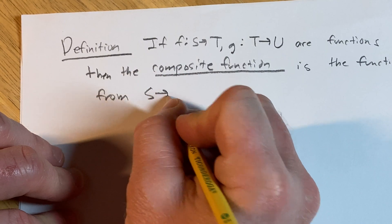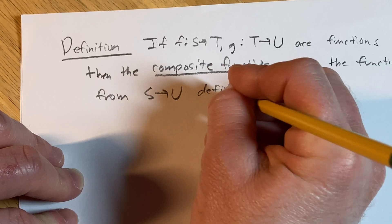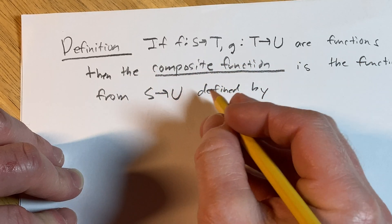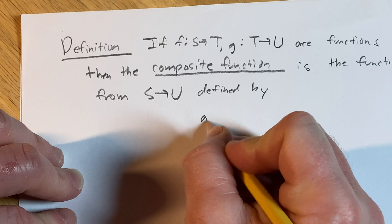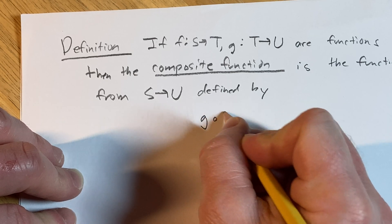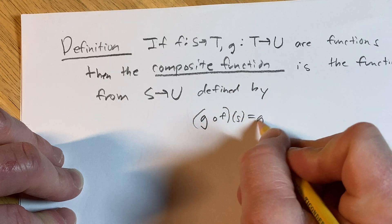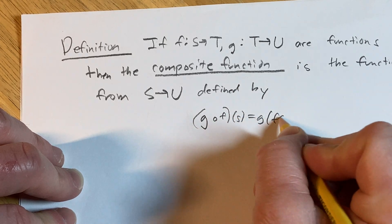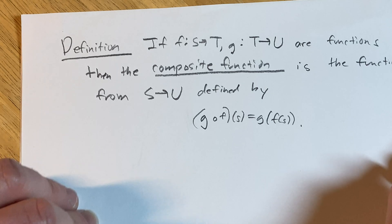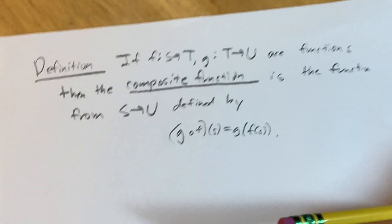From S to U, defined by the following formula: g of f of s, and this is equal to g of f of s. And that would be the composite function — that is the definition of the composite function.